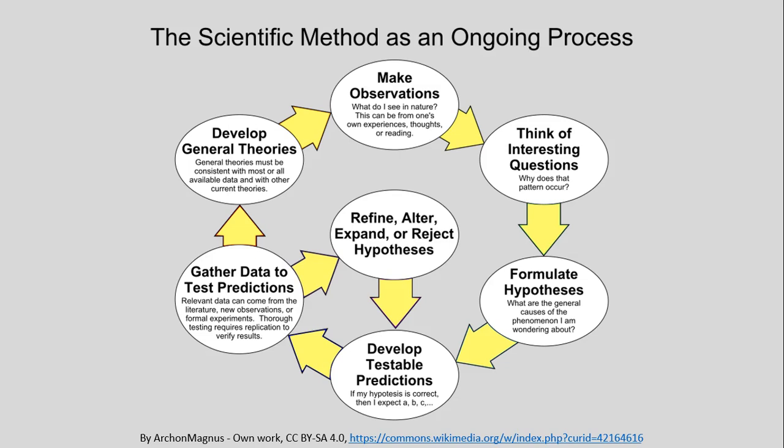Why does that pattern occur? Why does that process occur? What process is occurring to create that pattern is often the type of question we're going to be asking. Once we've made that observation and have some question about it, trying to understand why or how, then we can move on to our next step: formulating a hypothesis. Trying to link the question to the reason or cause — what are the causes of the phenomenon I'm wondering about? Generally, as we'll talk about, trying to link pattern and process.